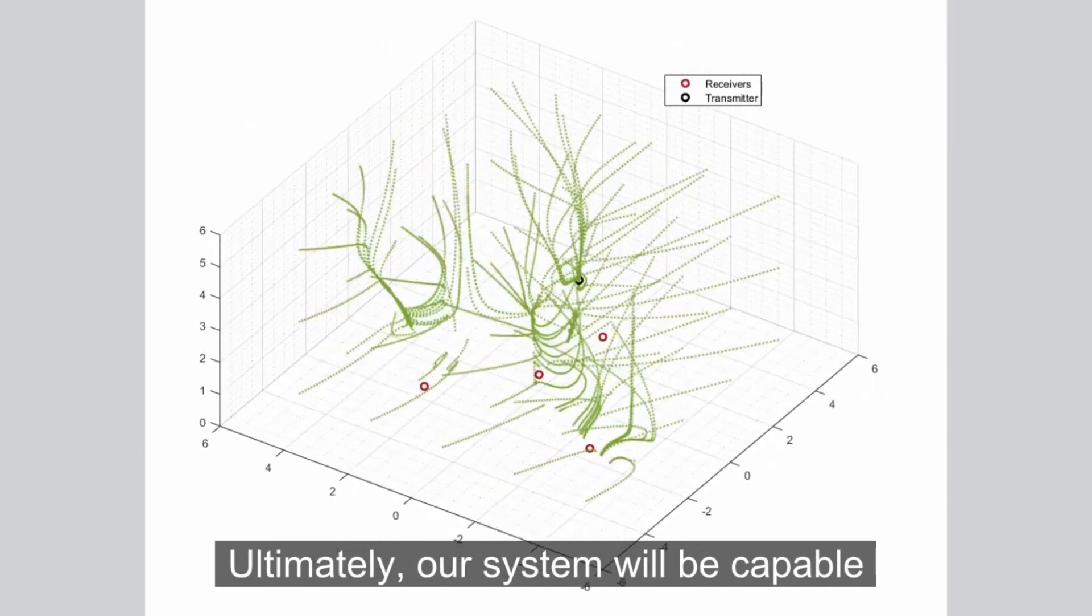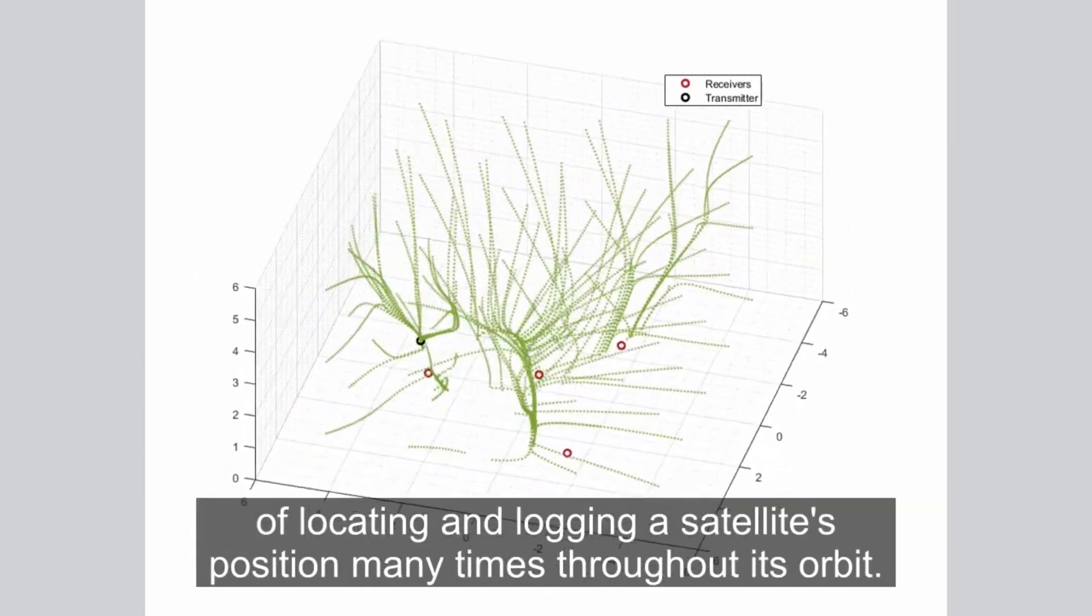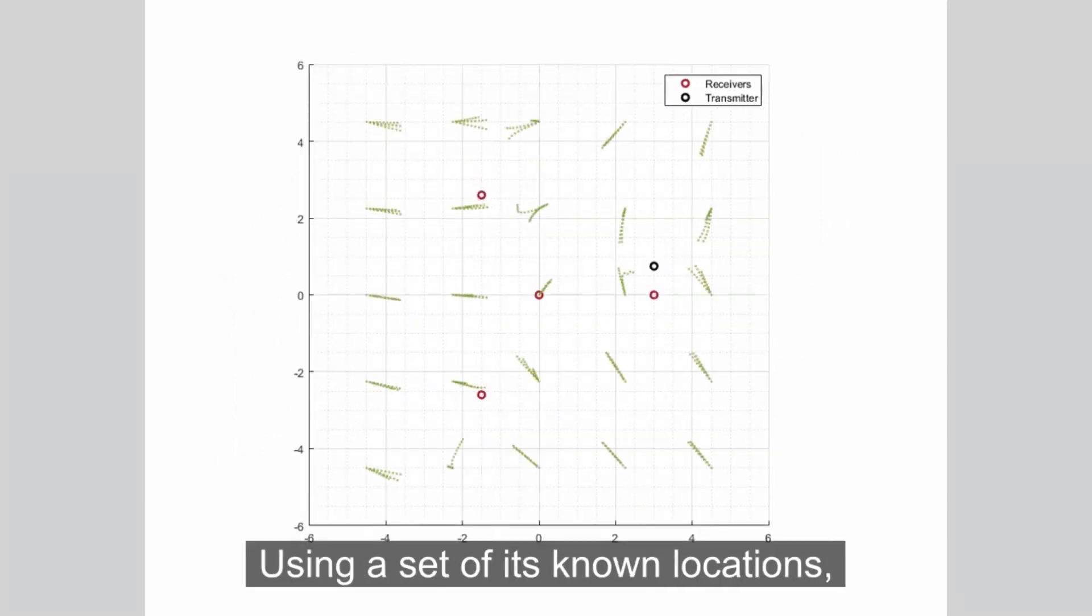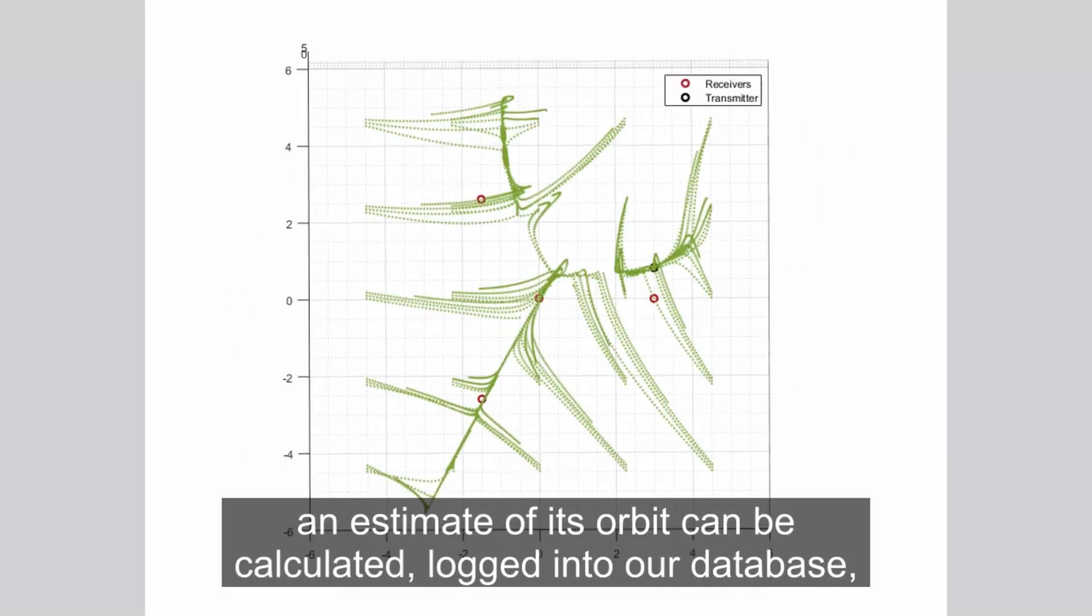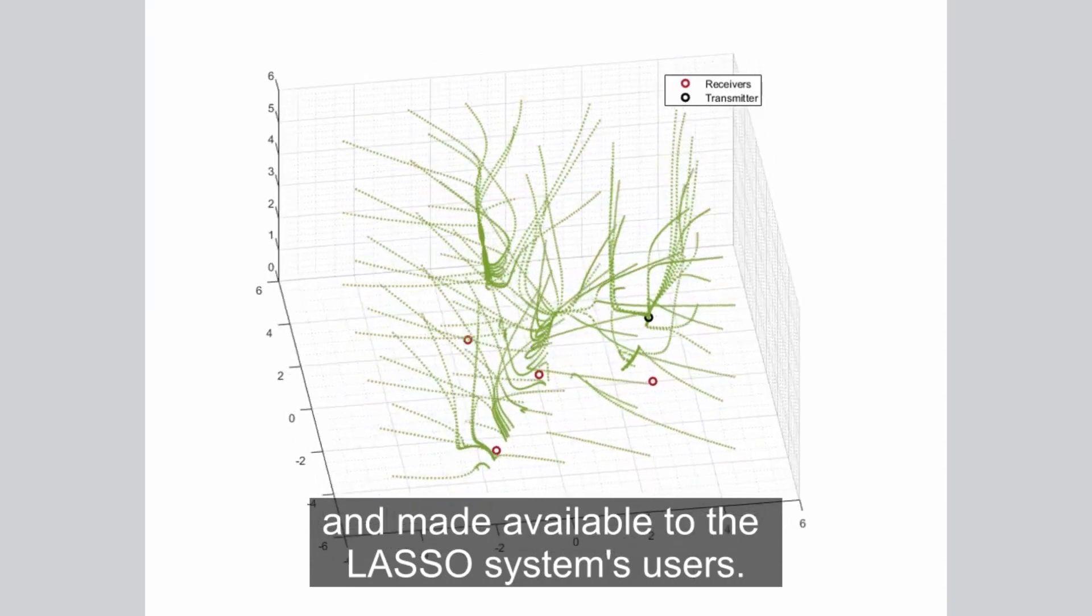Ultimately, our system will be capable of locating and logging a satellite's position many times throughout its orbit. Using a set of its known locations, an estimate of its orbit can be calculated, logged into our database, and made available to the LASSO system's users.